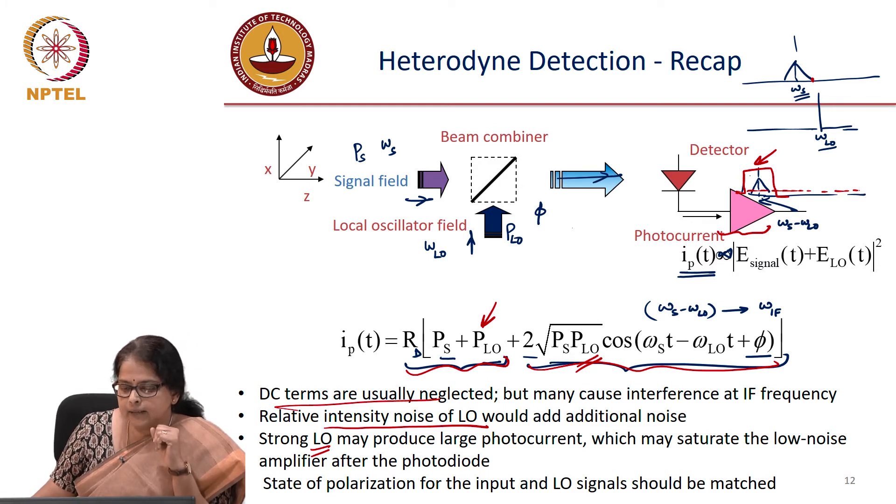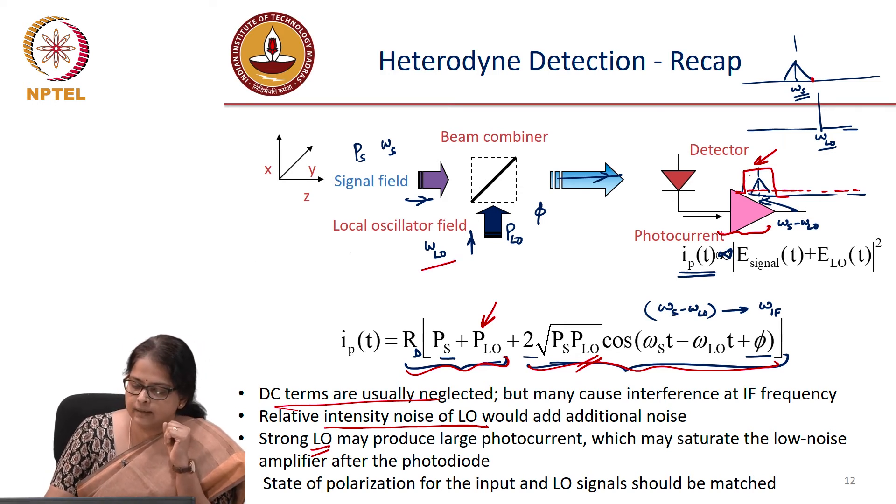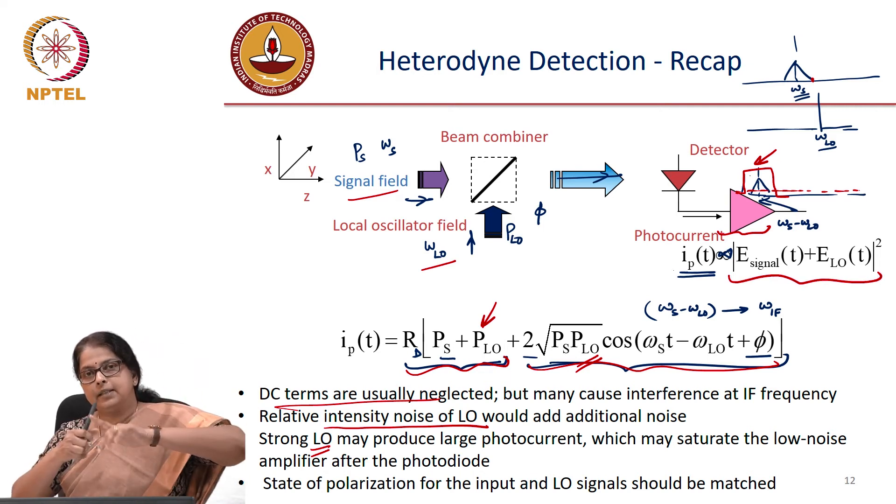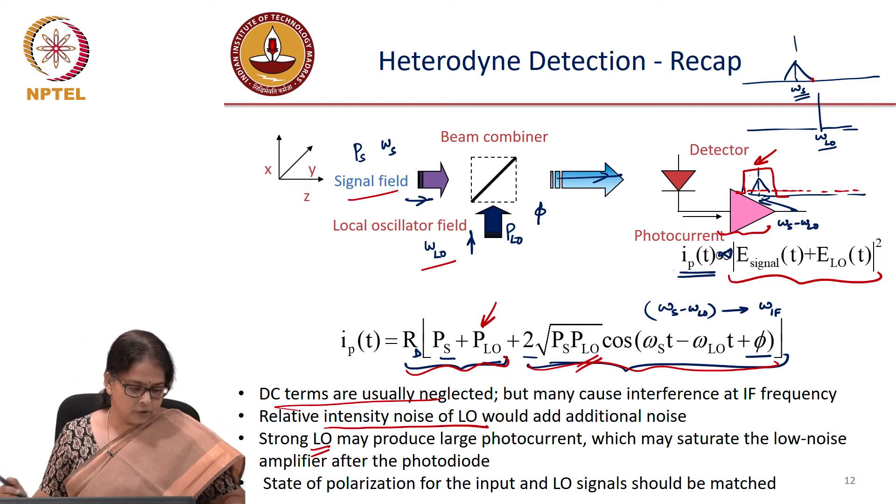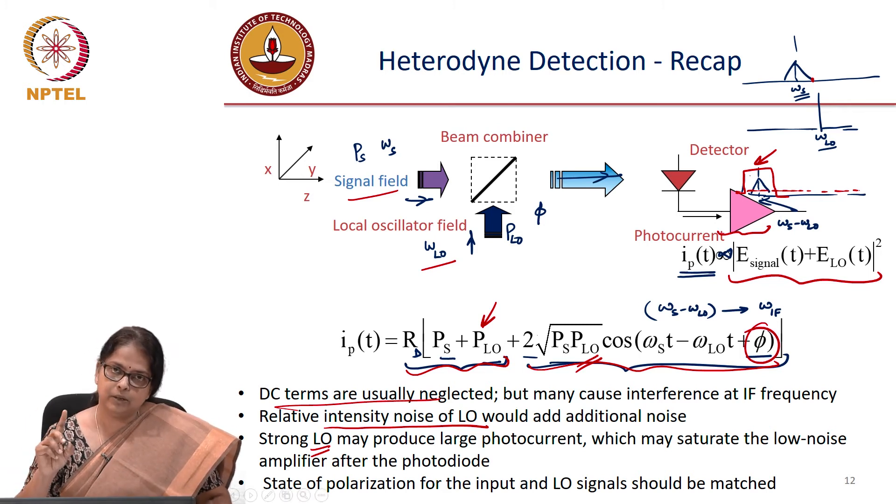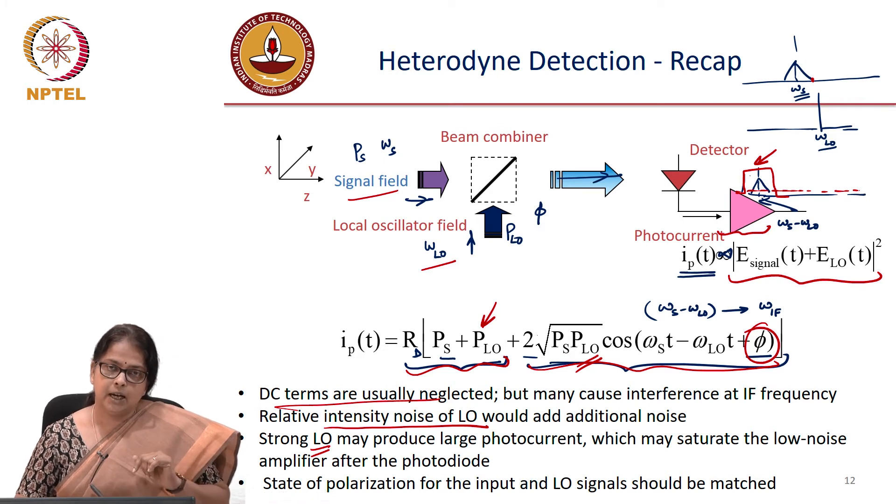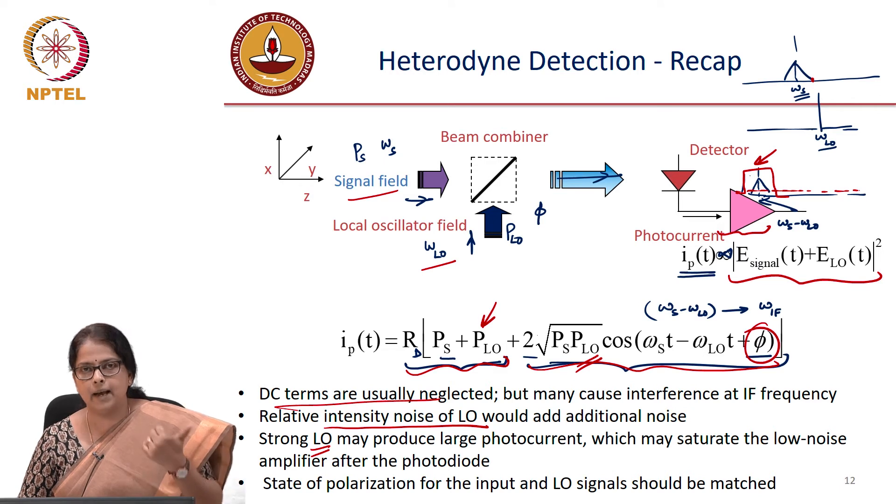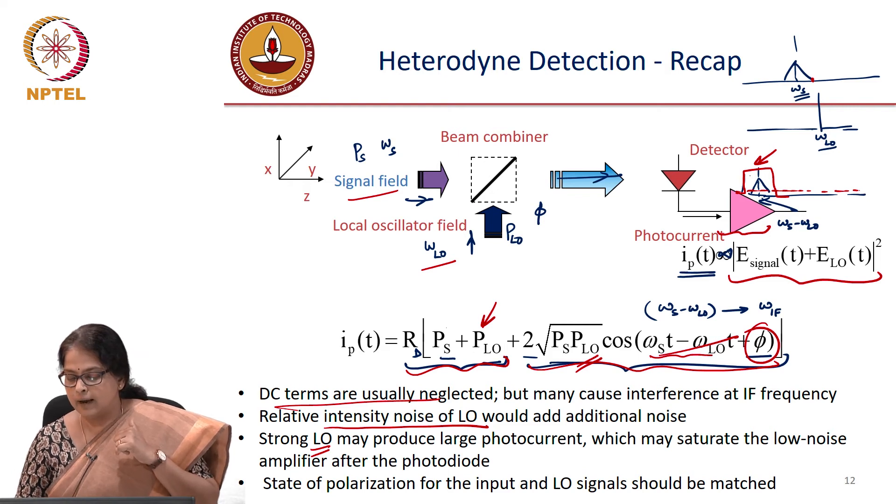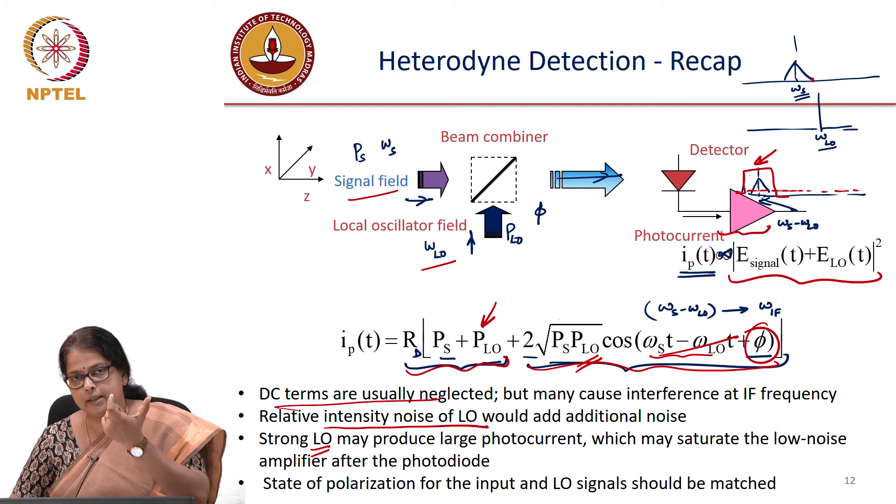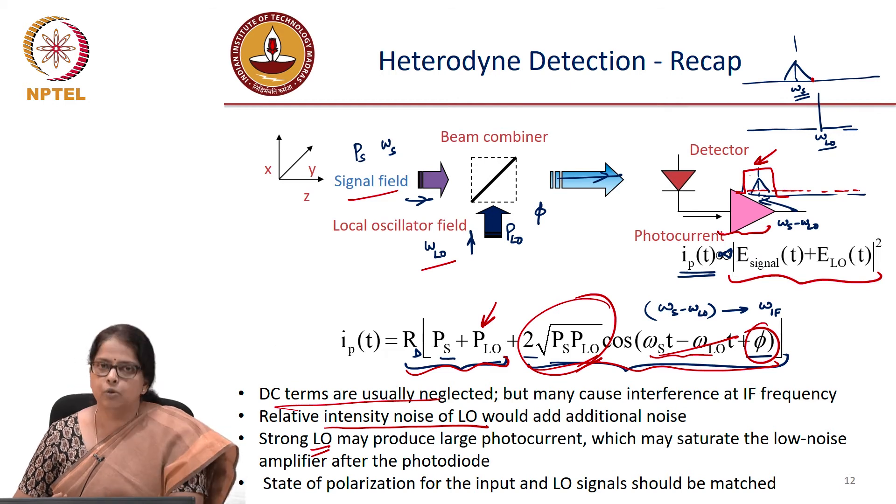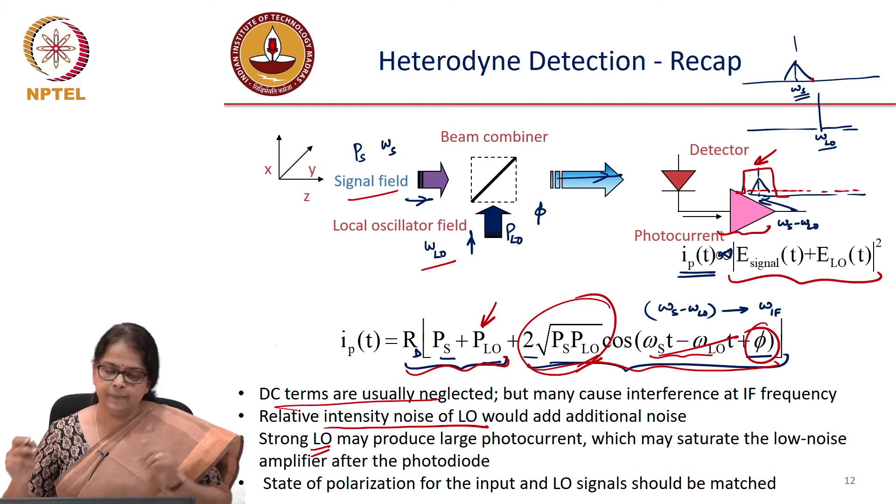The other important problem is that the state of polarization of this signal field and the LO field should be identical. Otherwise, you cannot just write it as the sum of LO plus signal. If the polarizations are orthogonal, in fact, the output is going to be minimal. So these are some of the issues we need to look at. And we also said that this phase is something that you need to keep it matched. In a homodyne detection, we said that the phase of the local oscillator should be matched with that of the signal. Otherwise, so in a homodyne detection, you will not have this term. So you will have a cos phi term. And unless you make sure that the phase is locked to a value which is close to 0, your heterodyne or homodyne signal will go to 0. So these are some of the issues that we had discussed in a heterodyne detection.